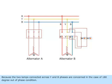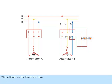Because the two lamps connected across Y and B phases are concerned in the case of 180 degree out of phase condition, the voltages on the lamps are zero. Hence, these two lamps will be dark.